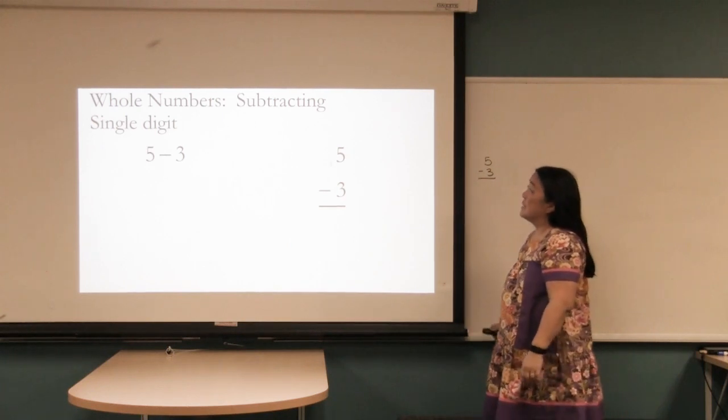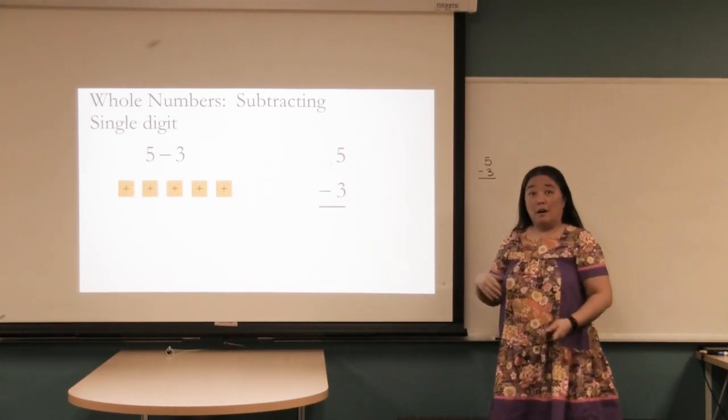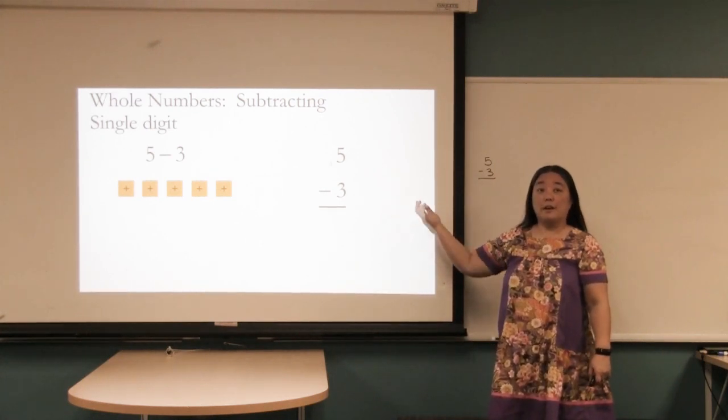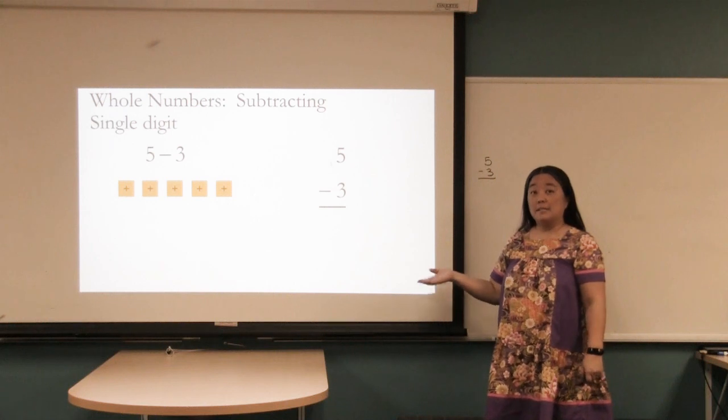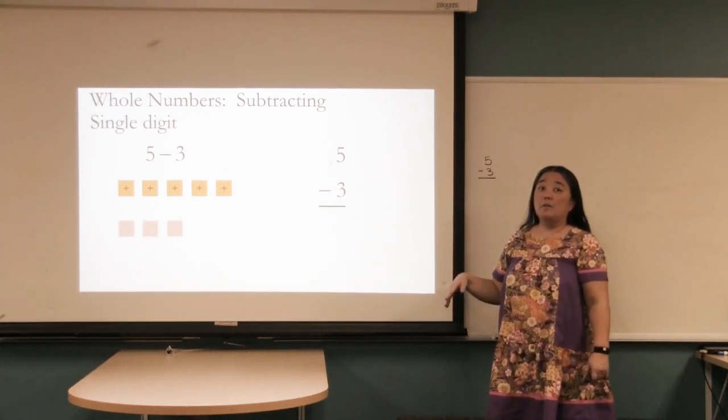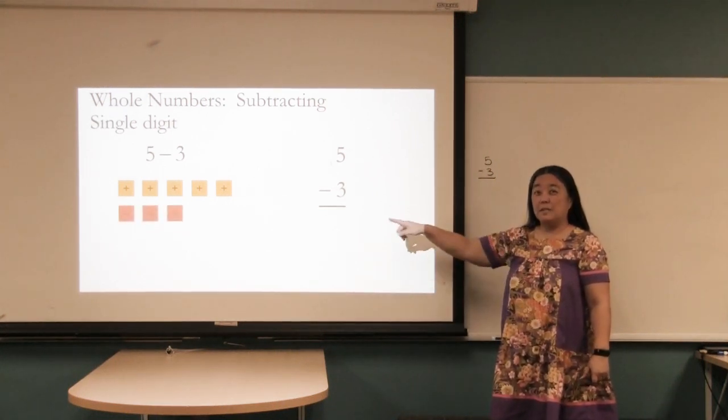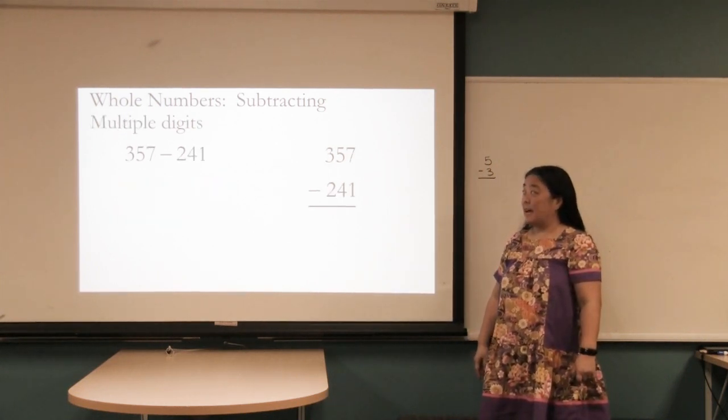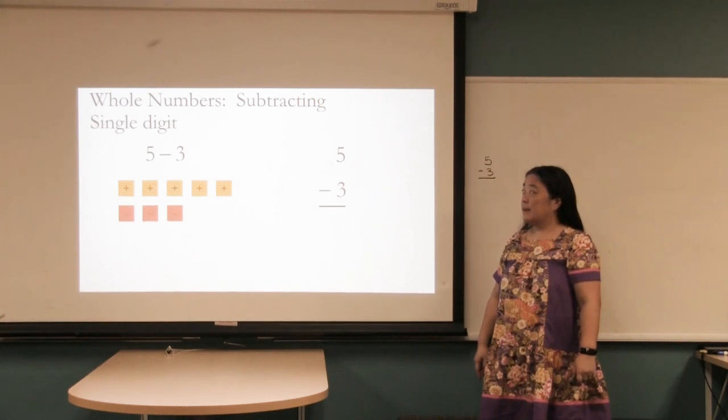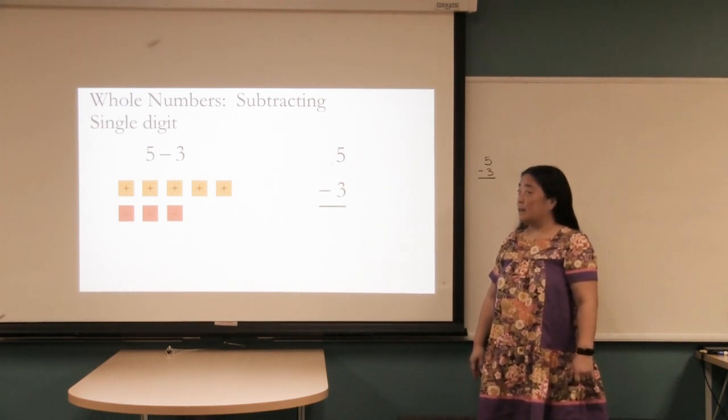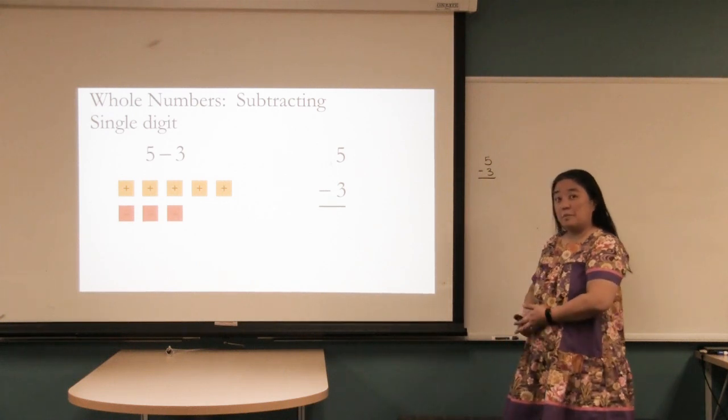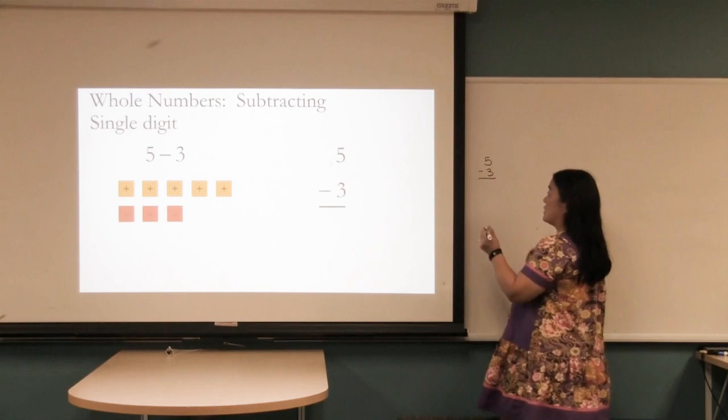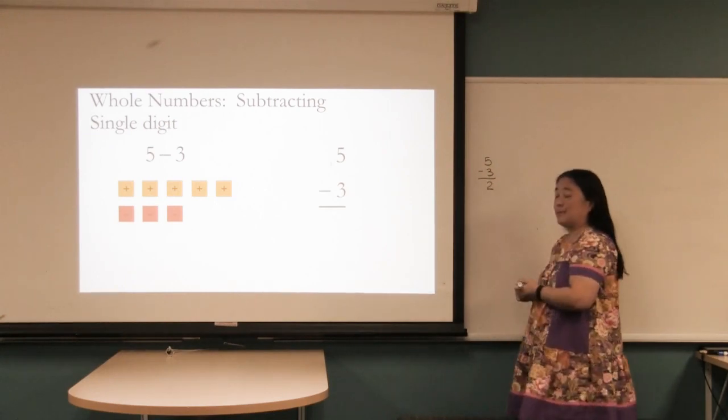We can also do this using our algebra tiles. Here's five, so those are fives and they all have pluses in them, meaning that there are five positives. And a minus three would be threes with minuses, so you'll see that these are in red and they have little minus signs in them. They're going to cancel out, and all you'll be left with is the two positives, because one positive and one negative when you're adding and subtracting is going to cancel out and you'll be left with two.